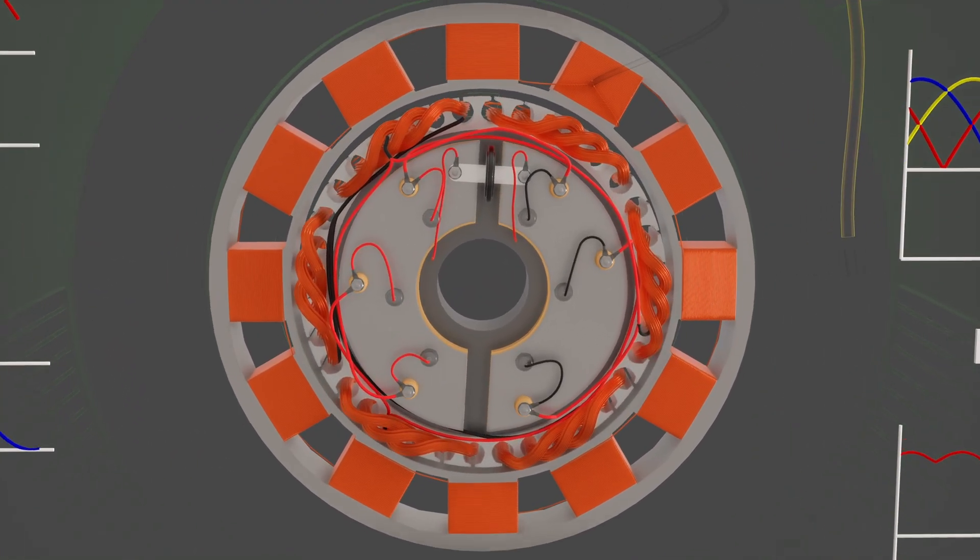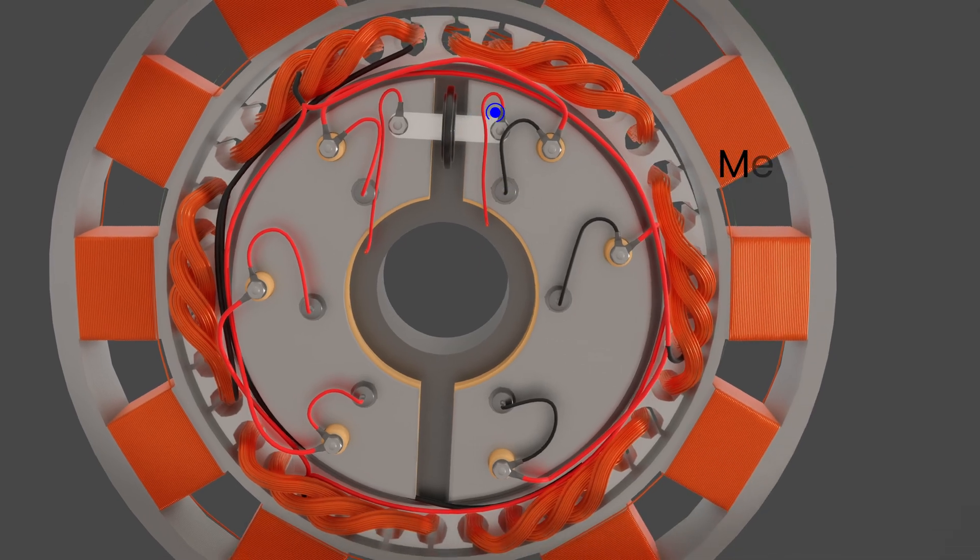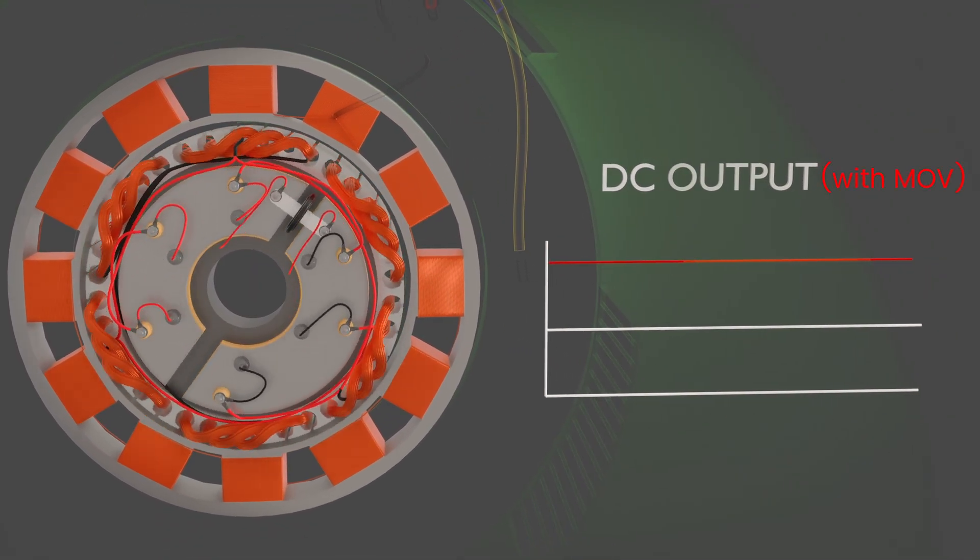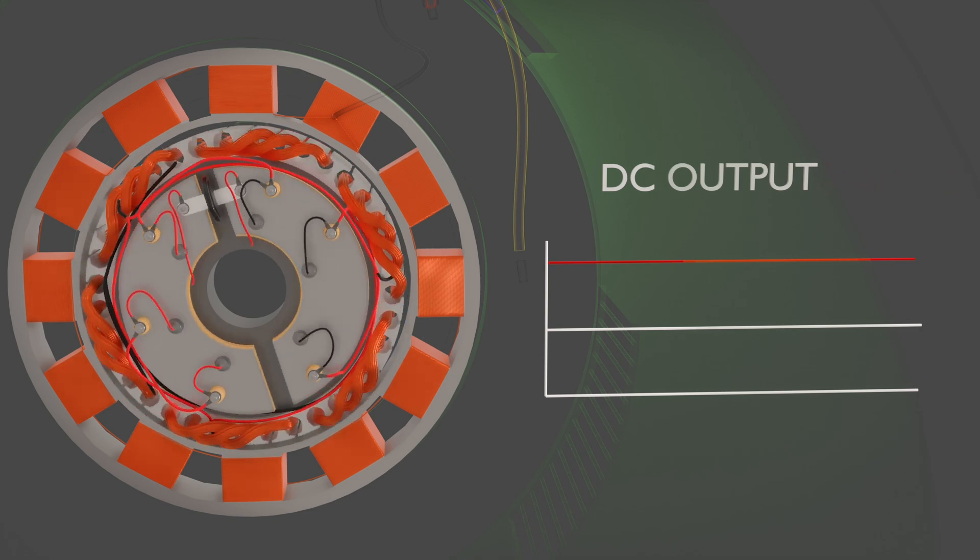For additional ripple reduction and protection against voltage spikes, a metal oxide varistor, MOV, is connected across the DC output. The MOV acts as a surge suppressor, clamping excessive voltages and protecting the rectifier diodes and main field winding from damage.